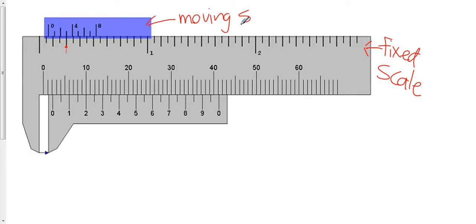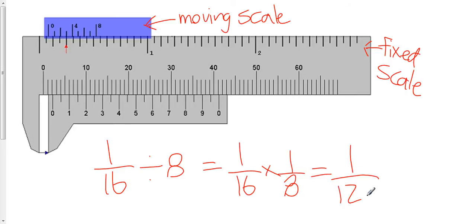The purpose of the moving scale here is to give us a more precise reading. The moving scale divides up my 16th of an inch into another 8 parts. So if I take 1/16th of an inch and I divide it by 8, that would be the same as saying 1/16th times 1 over 8, which is 1 over 128. That means that each of these little ticks here is worth 1/128th of an inch.